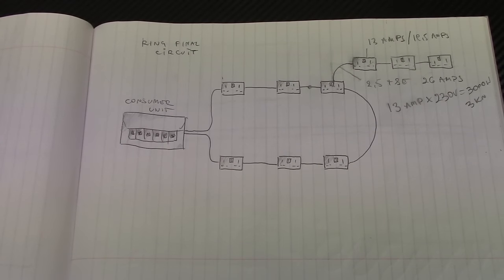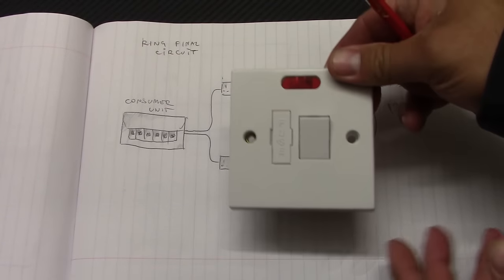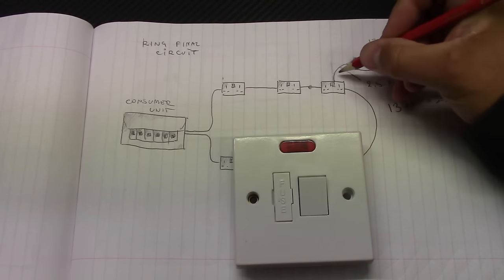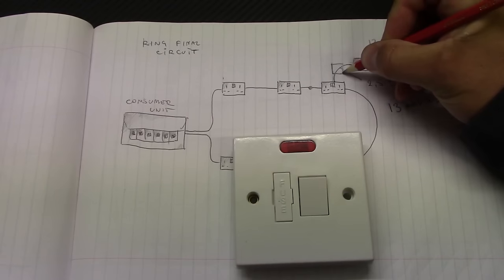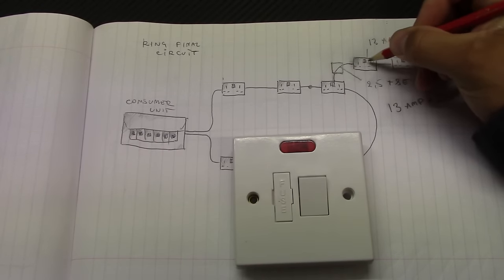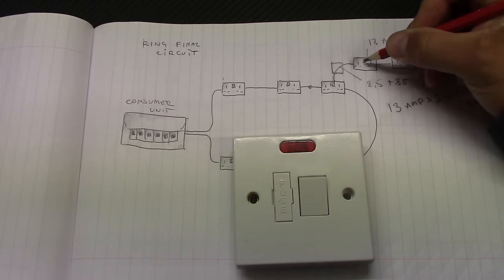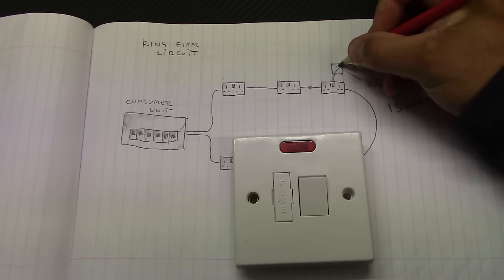So the right thing to do is to install FCU, fused connection unit, somewhere in here on this piece of cable before the first unfused spare. So now obviously this unfused spare and the rest becomes a fused spare because you've got the protector here.